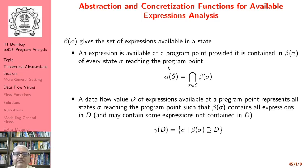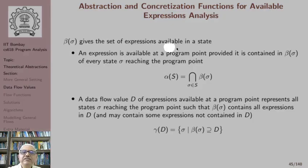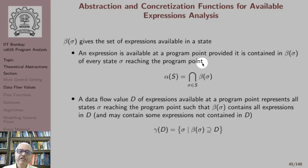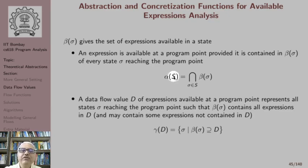To understand the concretization and abstraction functions, we play the game of the representation function beta. Beta(sigma) gives the set of available expressions in a state. Given a set of states, an expression is available at a program point in the abstract world if it is contained in beta(sigma) for every state reaching the program point. Therefore, our abstraction function alpha, given a set of states S, computes the intersection of beta(sigma) for every sigma in S.